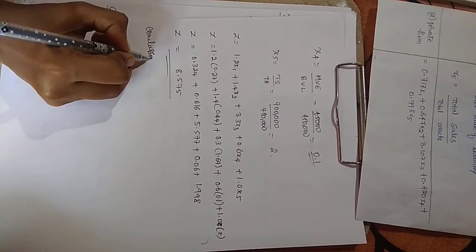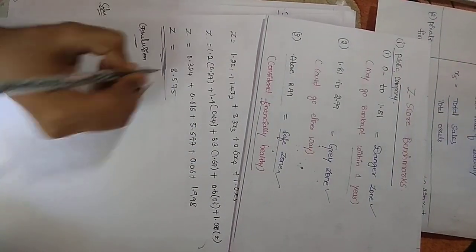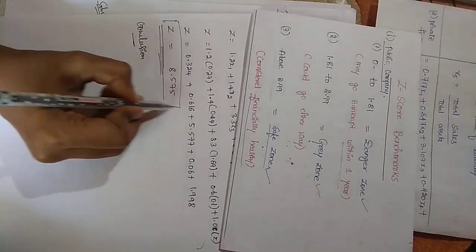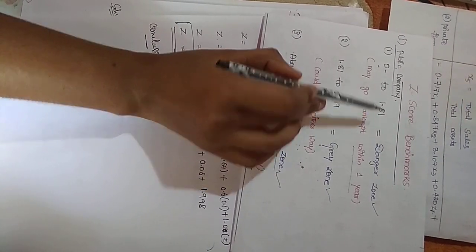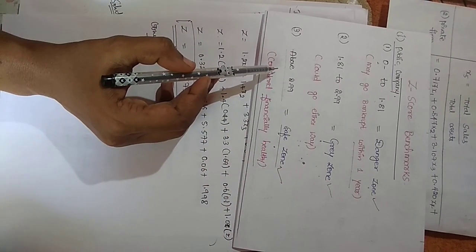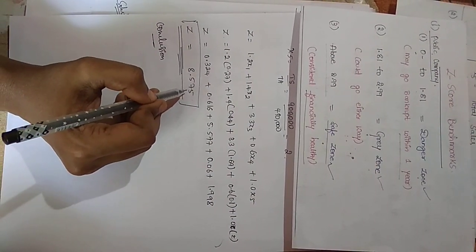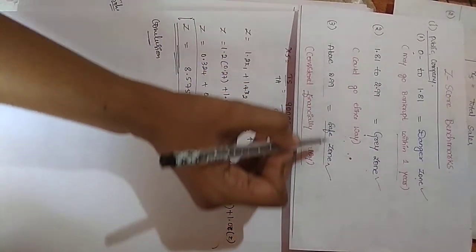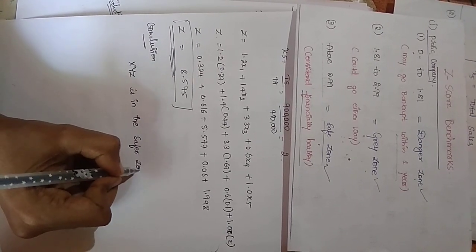For the conclusion, the Z-score benchmarks are: 0 to 1.81 is the danger zone; 1.81 to 2.99 is the grey zone; and above 2.99 is the safer zone. Since our calculated Z-score is 8.575, which is above 2.99, the XYZ company falls in the safer zone. That's all for this lecture.